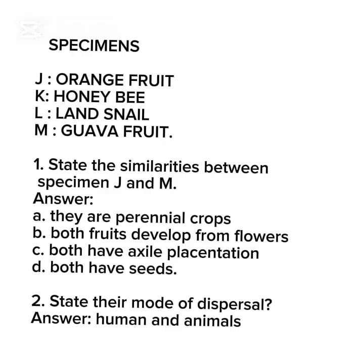Specimen J is an orange fruit, Specimen K is a honey bee, Specimen L is a land snail, and Specimen M is a guava fruit. Question one: state similarities between Specimen J and M — orange and guava fruits. Answer: they are perennial crops; both fruits develop from flowering plants; both have axial plantations; both have seeds.